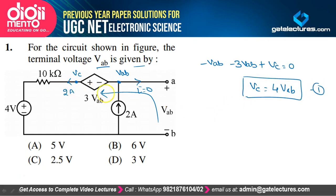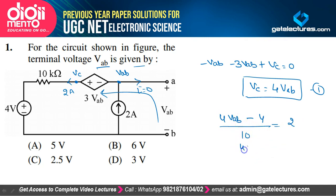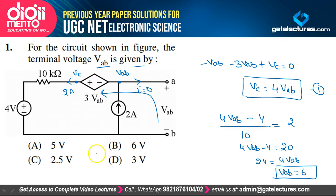Applying KCL: 4Vab minus 4Vab divided by 10 equals 2. Solving: 4Vab minus 4 equals 20, which gives 24 equals 4Vab, so Vab equals 6. The answer to this question is 6 volts, so option B is the correct option.